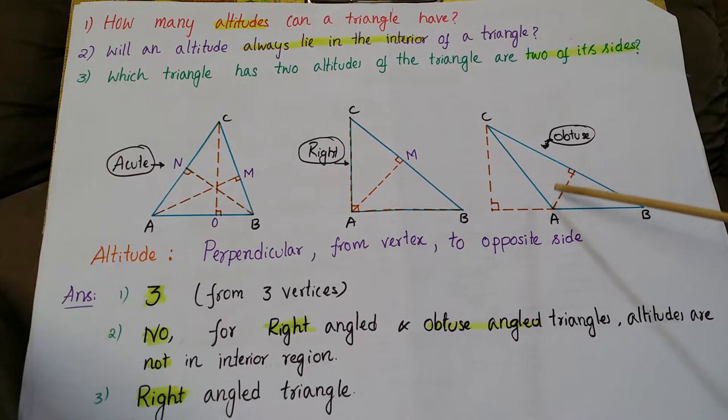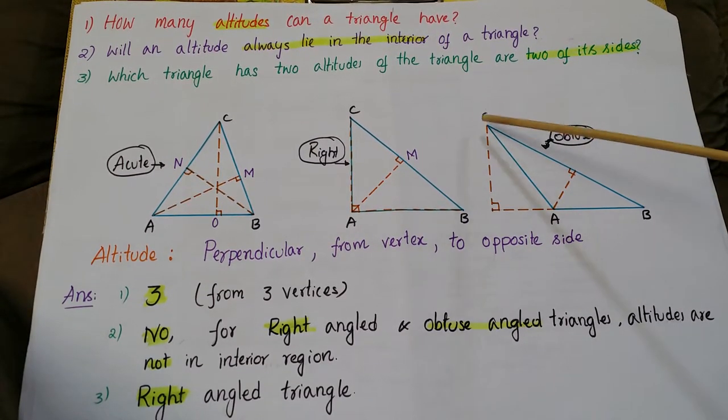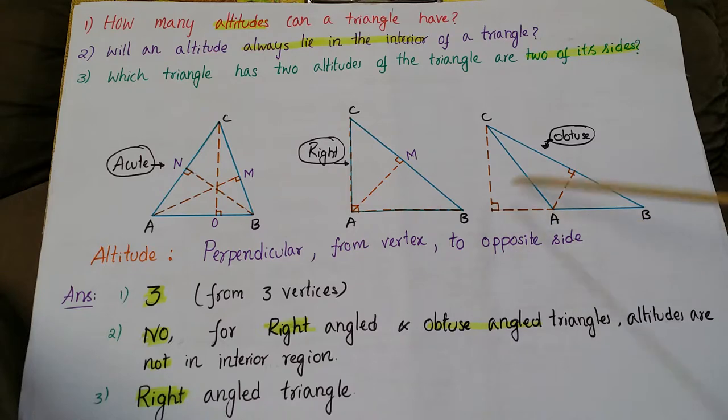If you see obtuse angle triangle, the altitude we can draw from A to here. This is the perpendicular. From B and C, perpendiculars are outside. We can draw outside of this triangle.